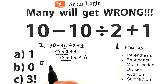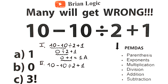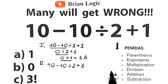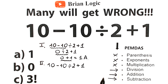Now let's solve this question according to PEMDAS. We have: 10 minus 10 divided by 2 plus 1. First, we scan what elements we have: subtraction, division, and addition. We find subtraction here, addition here, and division in the middle. We can reject parentheses, exponents, and multiplication because we don't have them. So we only have division, addition, and subtraction.